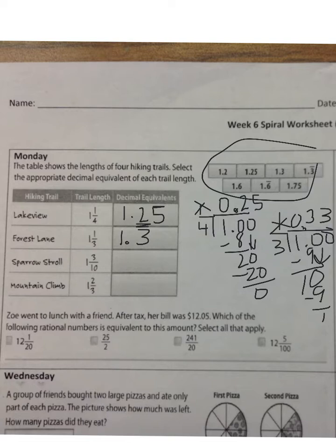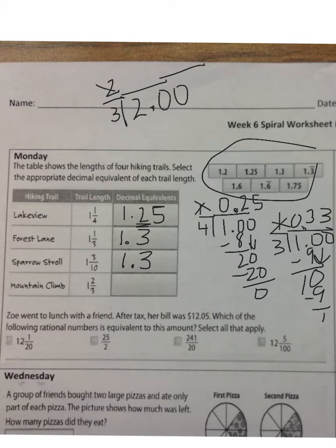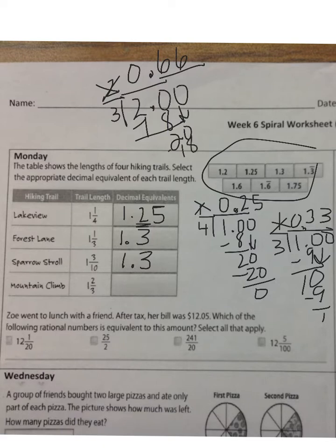For Sparrow's Stroll — one and three-tenths — if you just say that fraction out loud you can easily write it as the decimal one and three-tenths. For Mountain Climb we have one and two-thirds. To change two-thirds into a decimal, divide the numerator by the denominator, add a decimal and two zeros. Three can't go into two, but it goes into twenty six times — that's eighteen with two left over — and it keeps repeating. So Mountain Climb would be one and six-tenths with a repeating bar over the six.